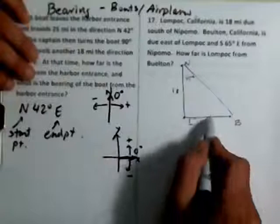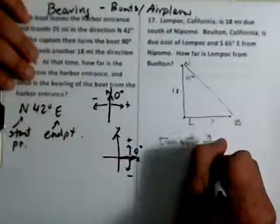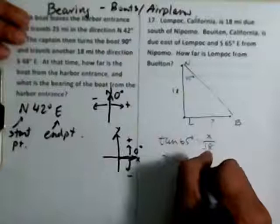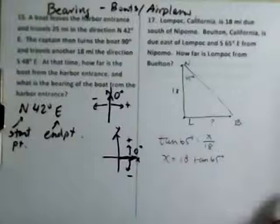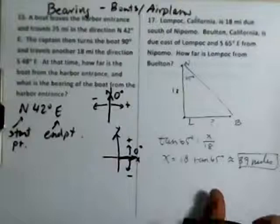How far is Lompoc from Buellton? That's the question we're looking for. You got the adjacent side and you need the opposite side. So you're going to use tangent. Tangent of 65 degrees equals opposite, let's call it x, over 18. And so x equals 18 times the tangent of 65 degrees. 18 tangent of 65. That's going to be approximately 39 miles. Not sure if that was the correct answer or not, but that's what I got on my calculator.